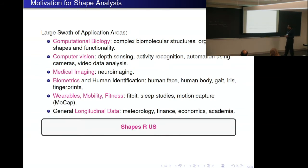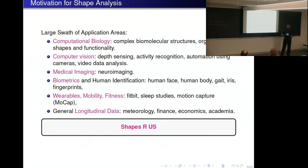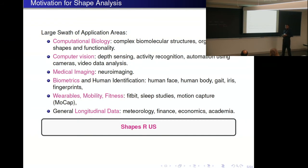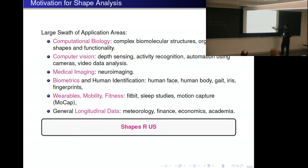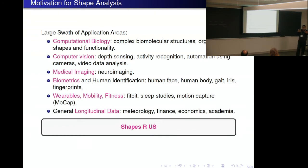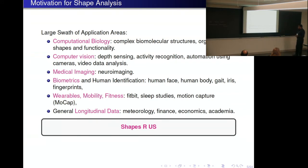But there are other areas. Some of us come from computer vision — using cameras to sense objects around us. One way to recognize and identify objects is through their shapes, their motion, their actions. There's also medical imaging, neuroimaging, and identification of humans using biometrics. One can look at fingerprints, facial shapes, shapes of body parts, shapes of the full body. All of these ideas can be used in a variety of applications.